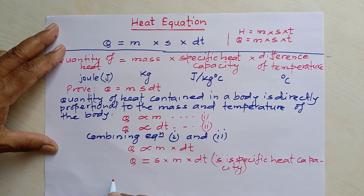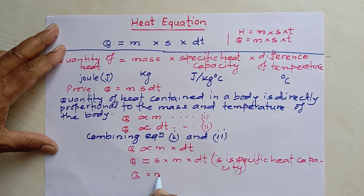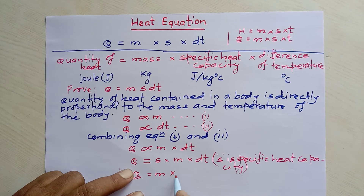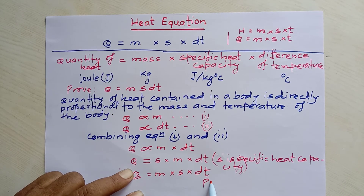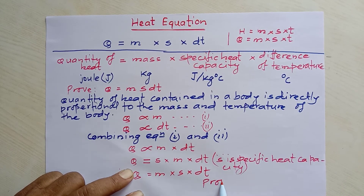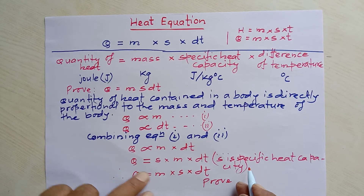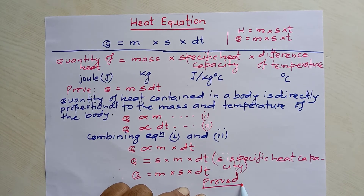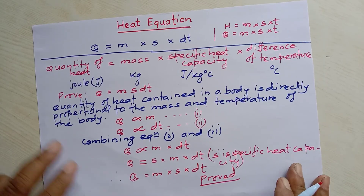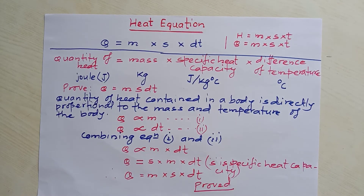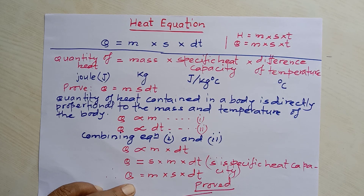Usually we write this as q equal to m into s into dt. This way we can see our equation is proved: q equal to m s dt. This is the heat equation and we can prove it this way.